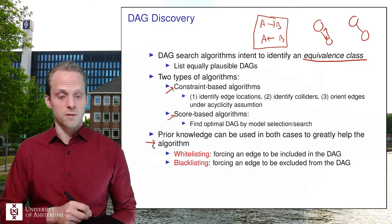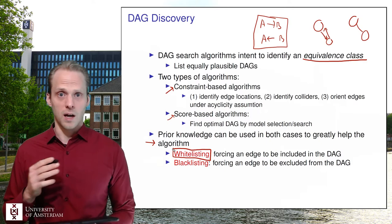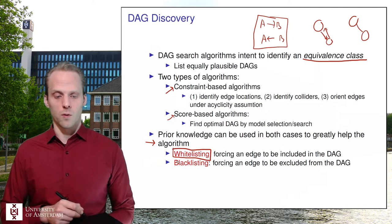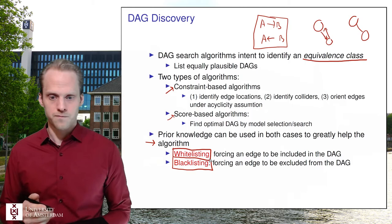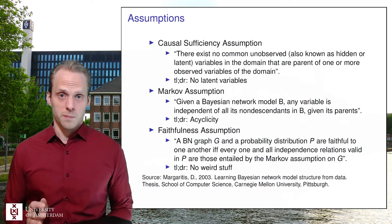In both cases you can use prior knowledge to help the algorithm a lot. This can be done by whitelisting certain effects — meaning you force an effect to be in the model — or blacklisting an effect for which you know it cannot be present. This eliminates a lot of potential models in the equivalence class.